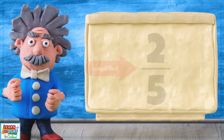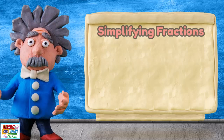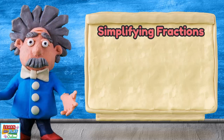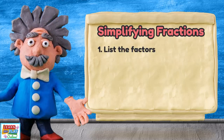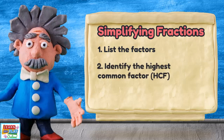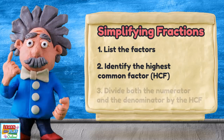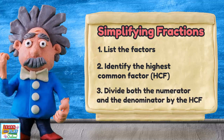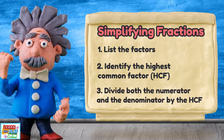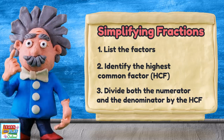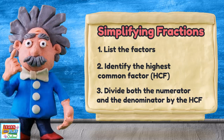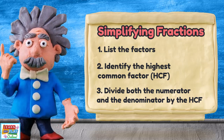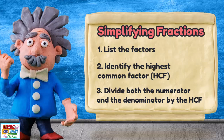Let's recap the method we used in this video to simplify fractions. First, we list the factors for both the numerator and the denominator. The second step is to identify the highest common factor. Next, we divide both the numerator and the denominator by the highest common factor. Once you've completed all of these steps, you have simplified the original fraction you started with.